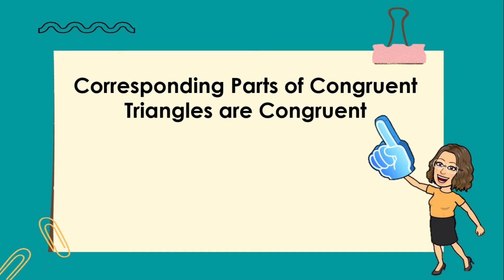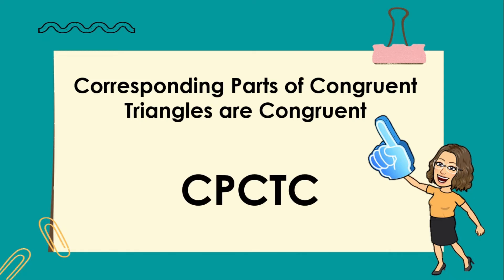This shows that if two triangles are congruent, then their corresponding parts are also congruent — or the corresponding parts of congruent triangles are congruent. This is a restatement of the definition of congruent triangles, and since it is often used as a reason in proofs, it is abbreviated as CPCTC.